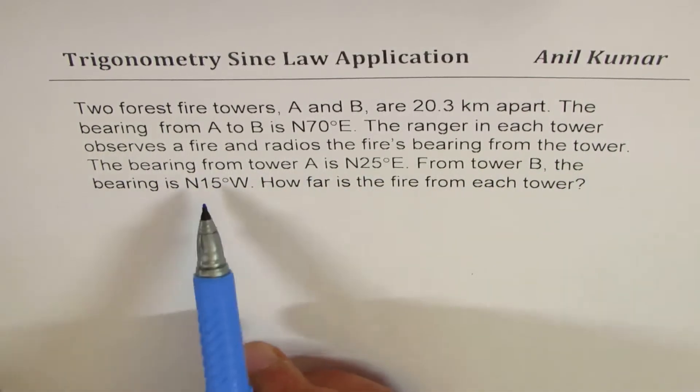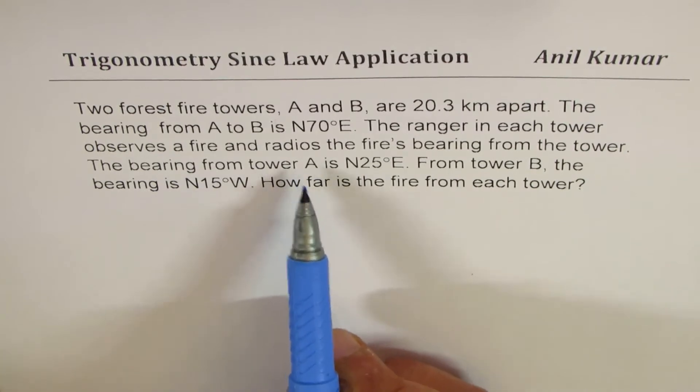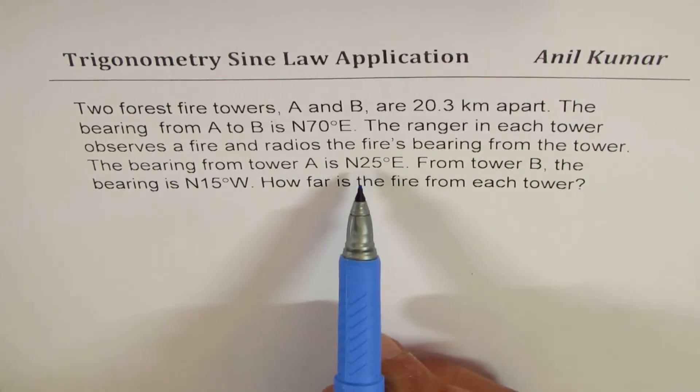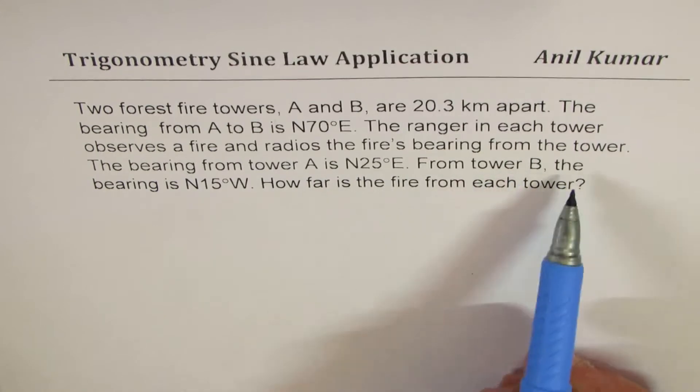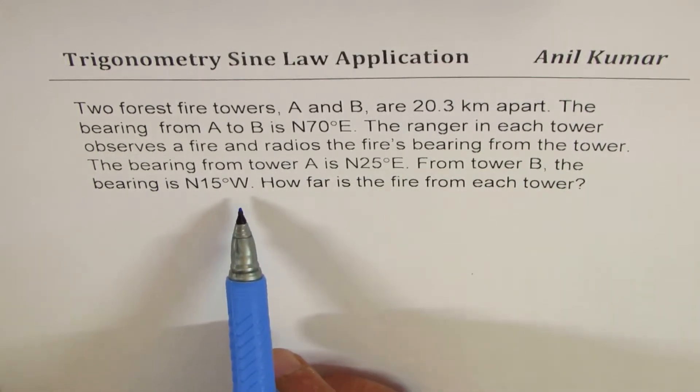The bearing from tower A is 25 degrees east of north. From tower B, the bearing is 15 degrees west of north. How far is the fire from each tower?